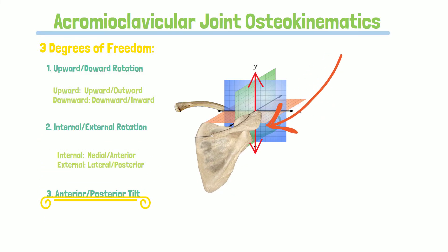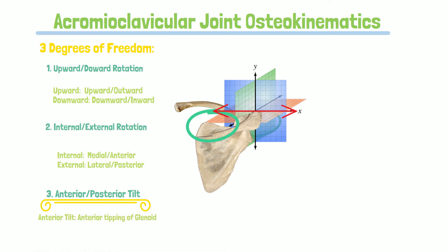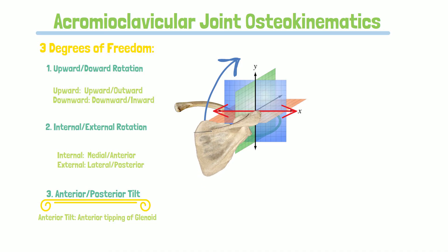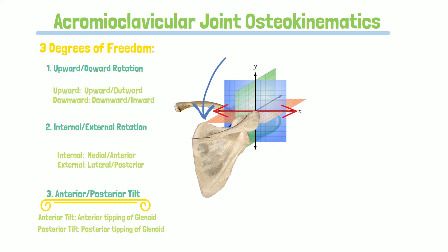And lastly, follow the superior angle of the scapula for the anterior and posterior tilt, which occurs around the x-axis. During anterior tilt, the superior angle of the scapula moves anterior on a stationary clavicle. Posterior tilt occurs when the superior angle moves posterior on a stationary clavicle.